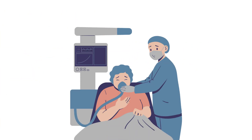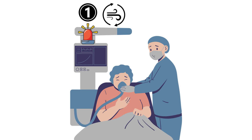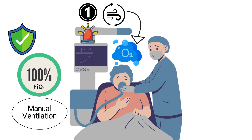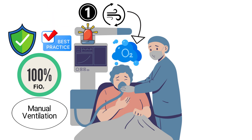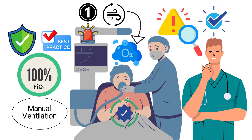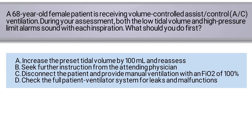So in summary, in cases where ventilator alarms are signaling potential patient compromise, your first action should always be to ensure that the patient is safely ventilated with adequate oxygenation. Manual ventilation with 100% FiO2 is the safest and most effective initial response. Once the patient is stabilized, then you can proceed with identifying and resolving the cause of the ventilator alarms. The correct answer is C: disconnect the patient and provide manual ventilation with an FiO2 of 100 percent.